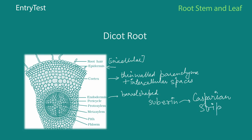Suberin is a waxy material that does not allow water to move through it, and that is the function of the endodermis. The next layer is the pericycle. Note that apart from the endodermis, all the inner layers are also known as the stele (S-T-E-L-E). The pericycle has thick-walled parenchyma.